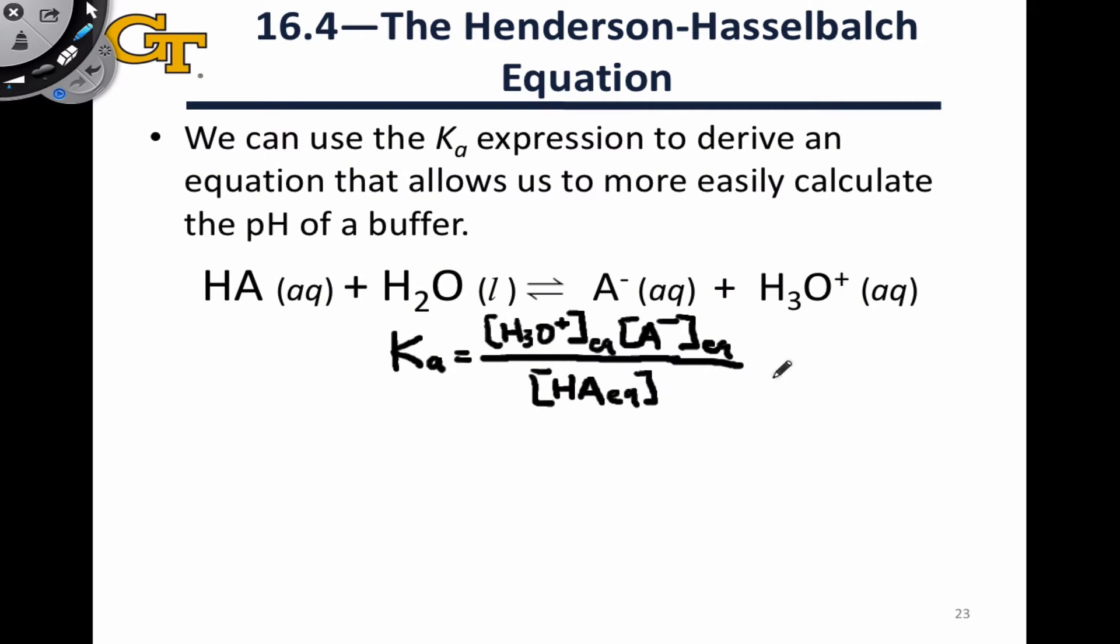The conjugate base concentration at equilibrium divided by the acid concentration at equilibrium. We can rearrange this equation slightly to isolate H3O+, at equilibrium, by multiplying both sides by HA at equilibrium divided by A- at equilibrium. And so we end up with HA at equilibrium times Ka divided by the conjugate base concentration at equilibrium, is equal to the concentration of H3O+, at equilibrium.